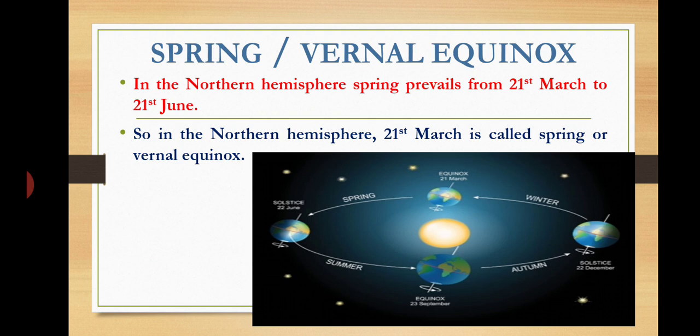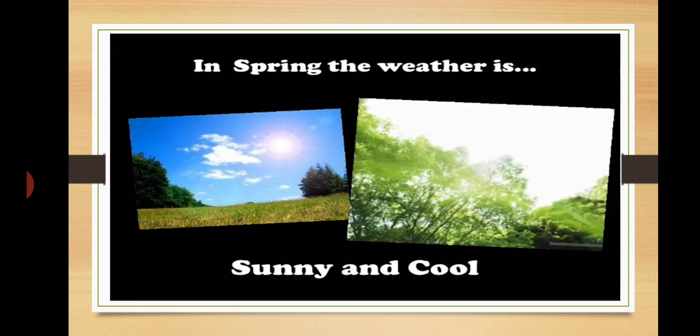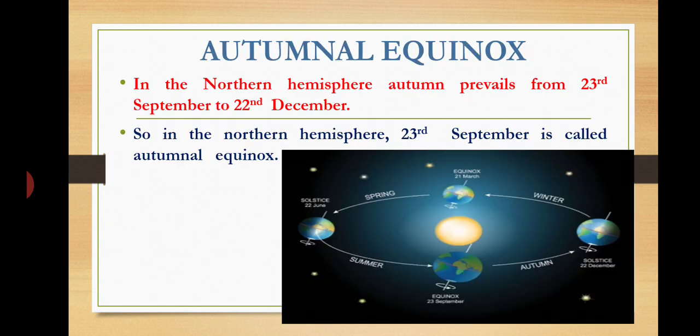In this diagram, the spring or vernal equinox is shown more clearly. In the northern hemisphere, spring prevails from 21st March to 21st June, so 21st March is called the spring or vernal equinox. In spring, the weather is sunny and cool. With the help of another diagram, we understand autumnal equinox — in the northern hemisphere, autumn prevails from 23rd September to 22nd December, so 23rd September is called the autumnal equinox.